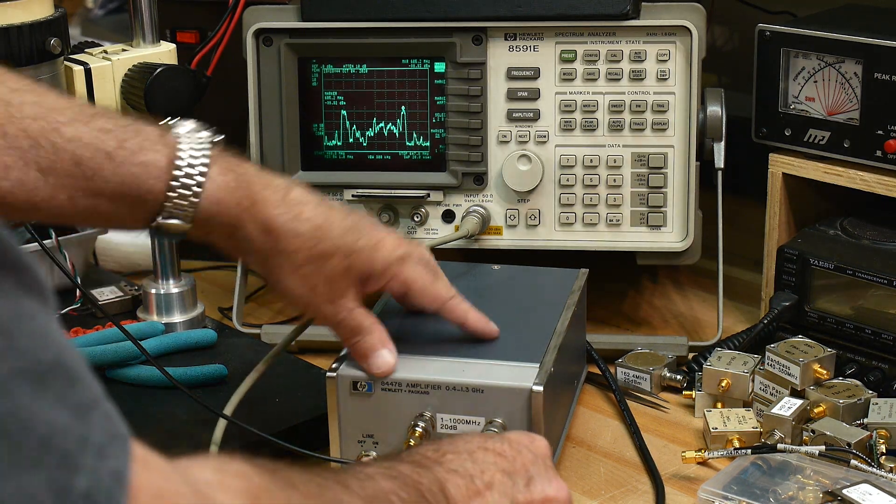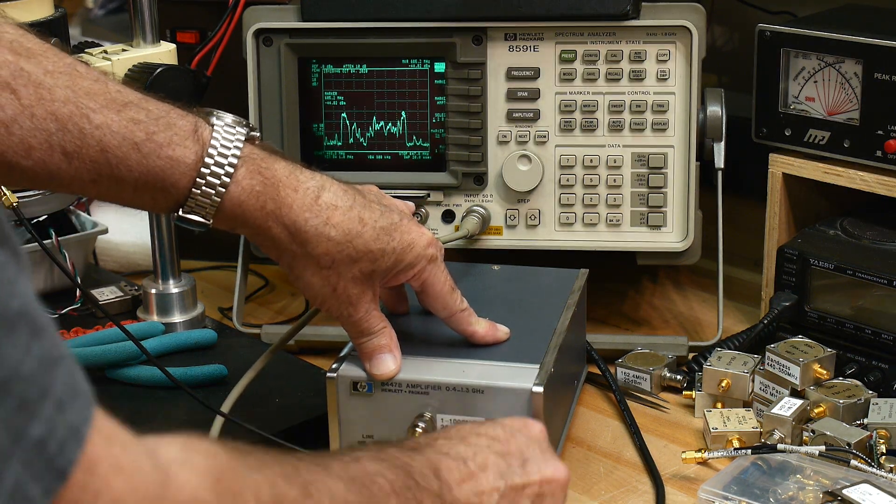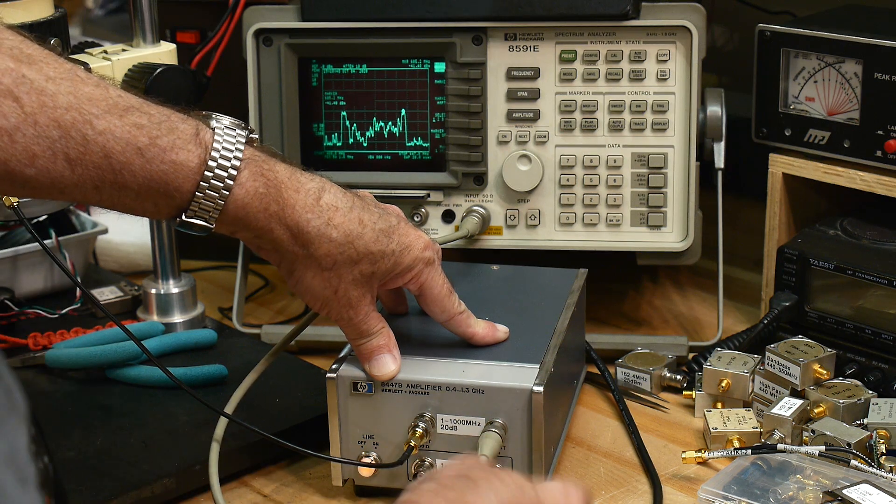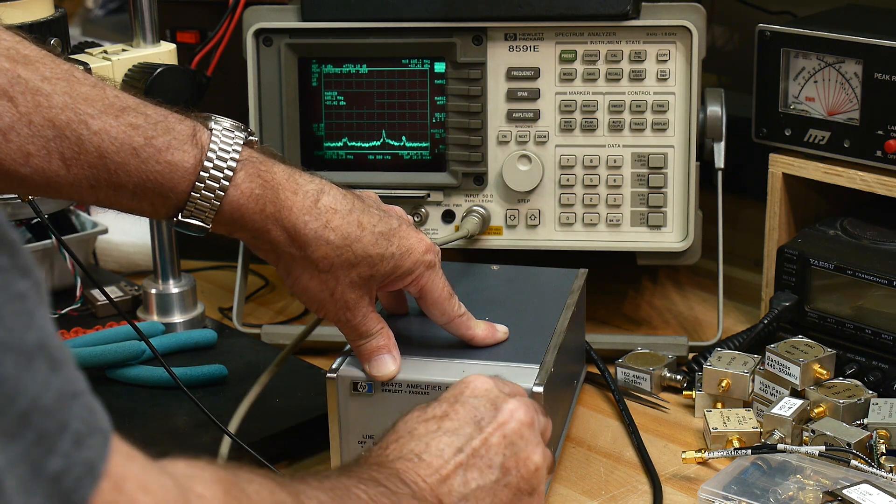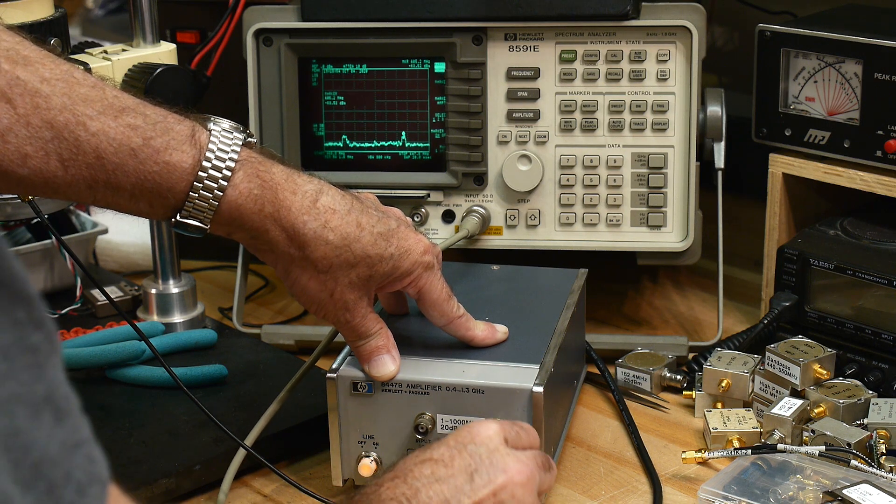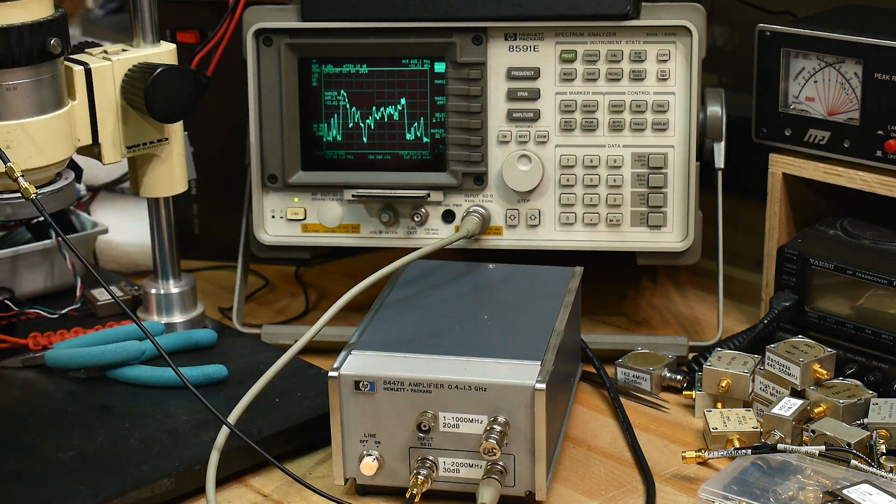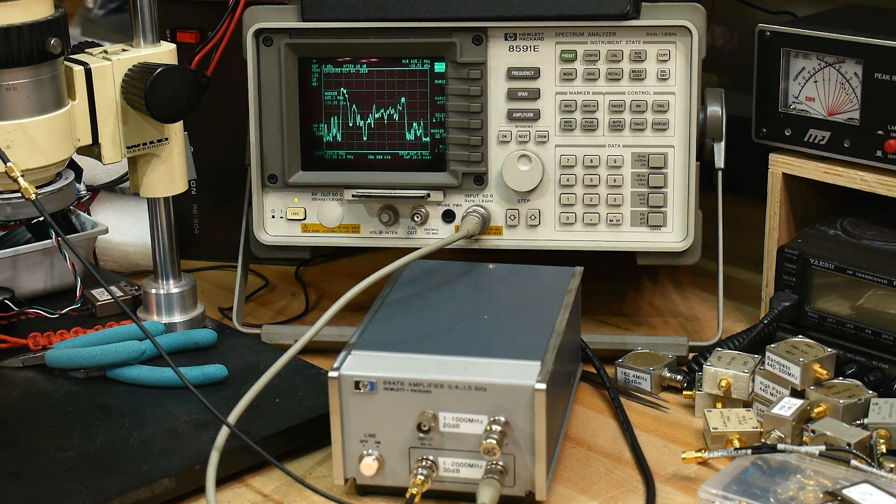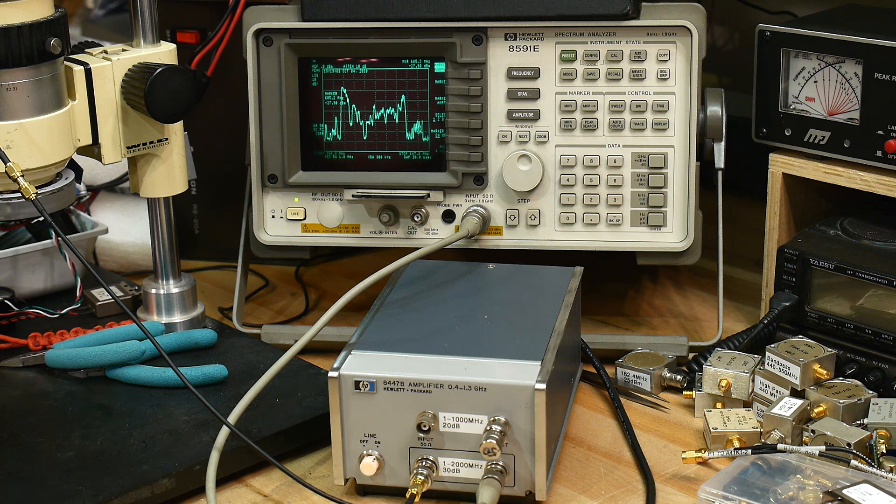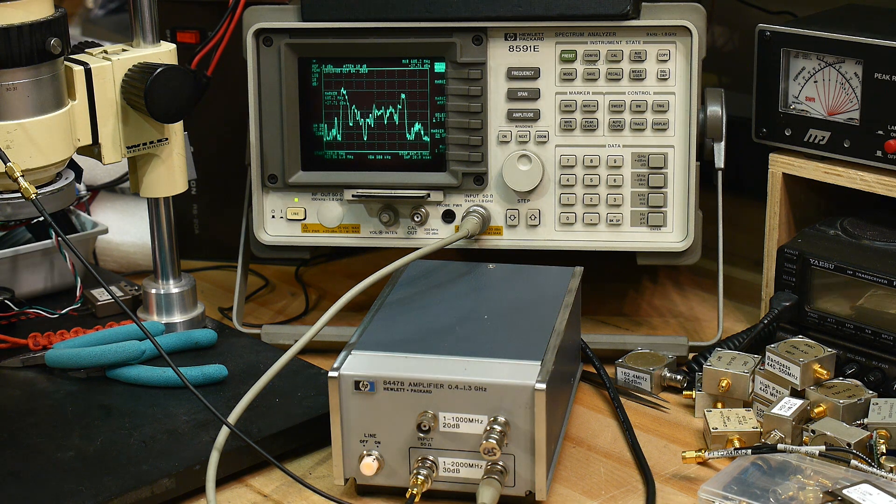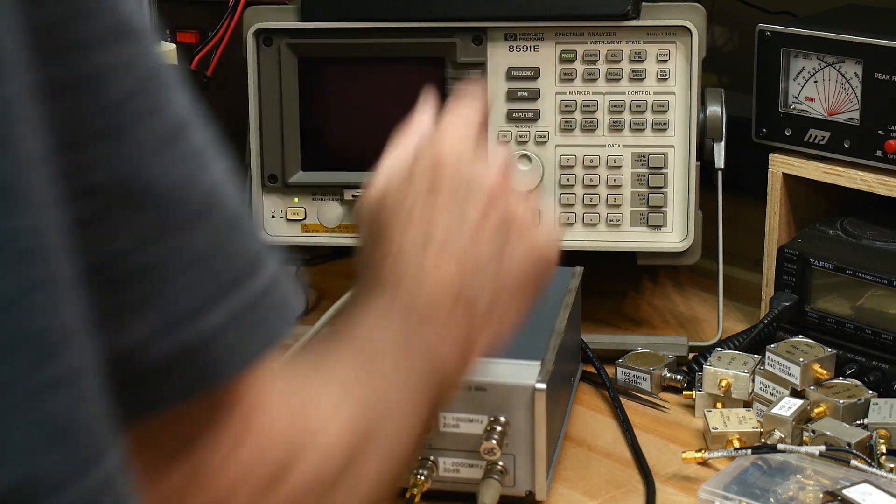I've got a 50 ohm load on it just so it doesn't want to oscillate. I'm going to move down here to the 30 dB, see how it performs, and put that one back up here. It's doing a good job too, even a little bit bigger now. 30 dB instead of 20 dB. There you go, we'll zoom all the way out again.